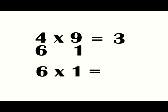To find the rest of our answer, you simply multiply the two bottom numbers. In this case, 6 times 1 equals 6. So 6 is the second half of our answer. Now we have our answer. 4 times 9 equals 36.